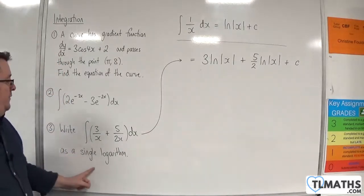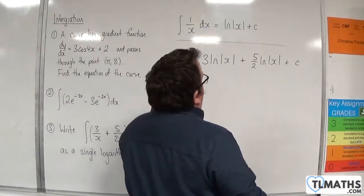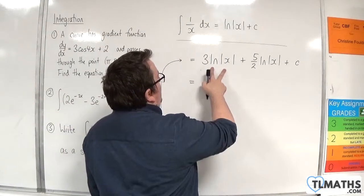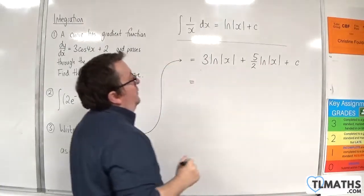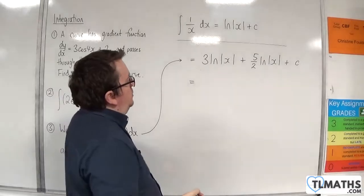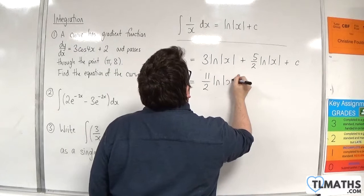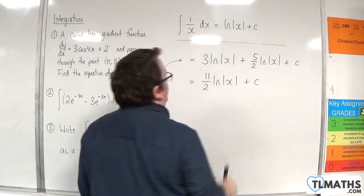Now we need to write this as a single logarithm. We have 3 log x and 5 halves log x, so we can add those together. In total, we will have 11 halves natural log of mod x plus a constant c.